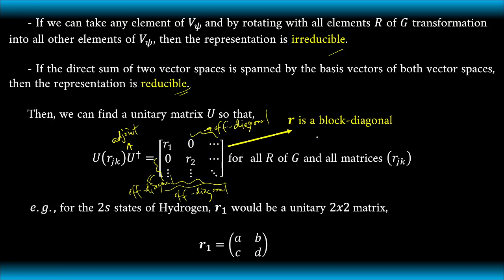Now, here we have r is a block diagonal for all R of G and all matrices (rⱼₖ). For example, if we can imagine the states of the hydrogen, for example, we have the two states of hydrogen, R₁ would be a unitary two-by-two matrix. Or we can represent it in terms of this one, where a, b, c, d are the elements of the matrix.